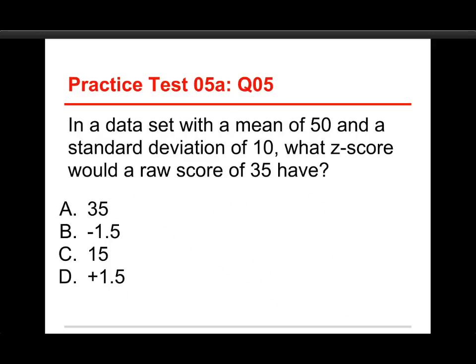Alright, last question in this practice test. In a data set with a mean of 50 and a standard deviation of 10, what z-score would a raw score of 35 have? And the choices are 35, -1.5, 15, or +1.5.